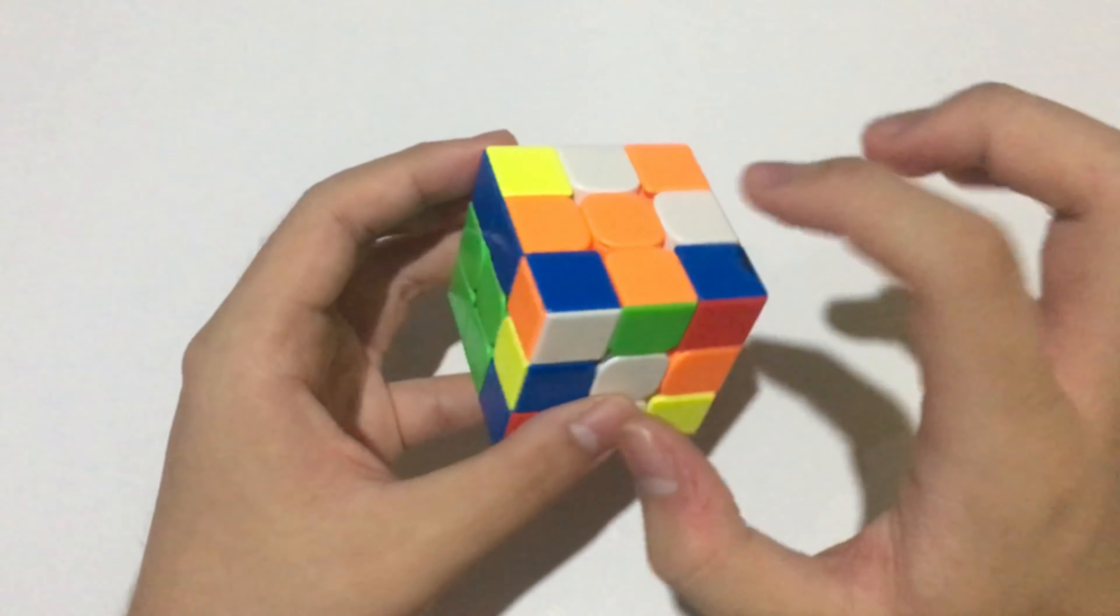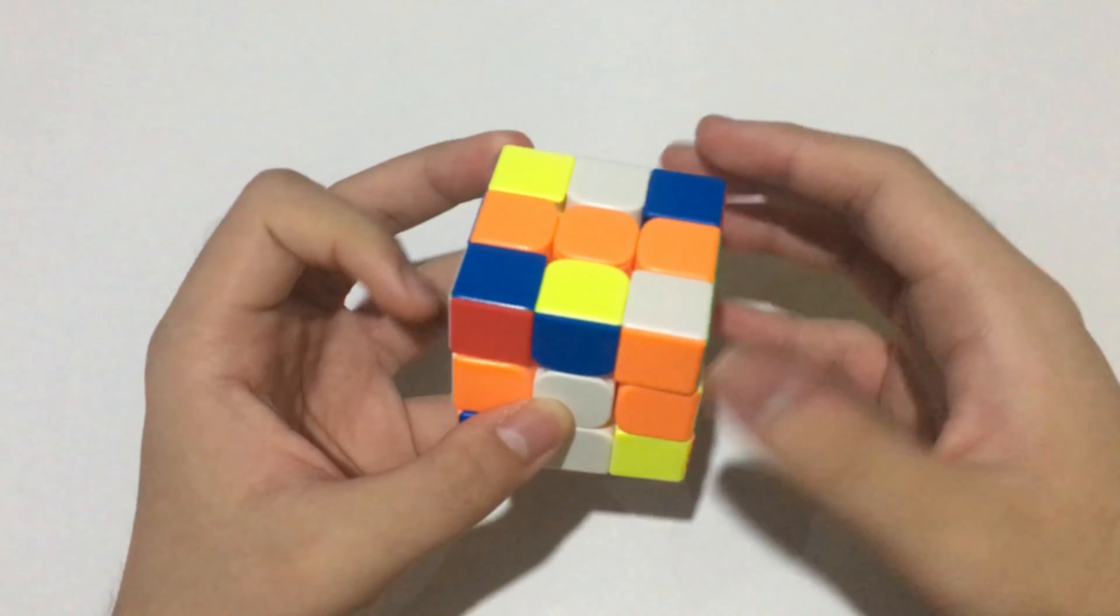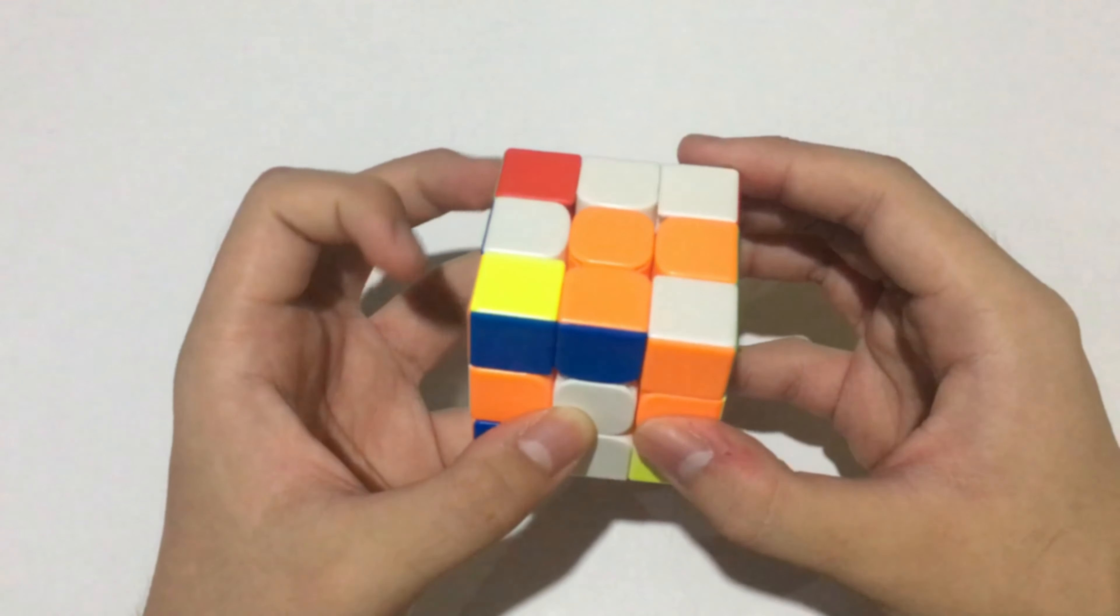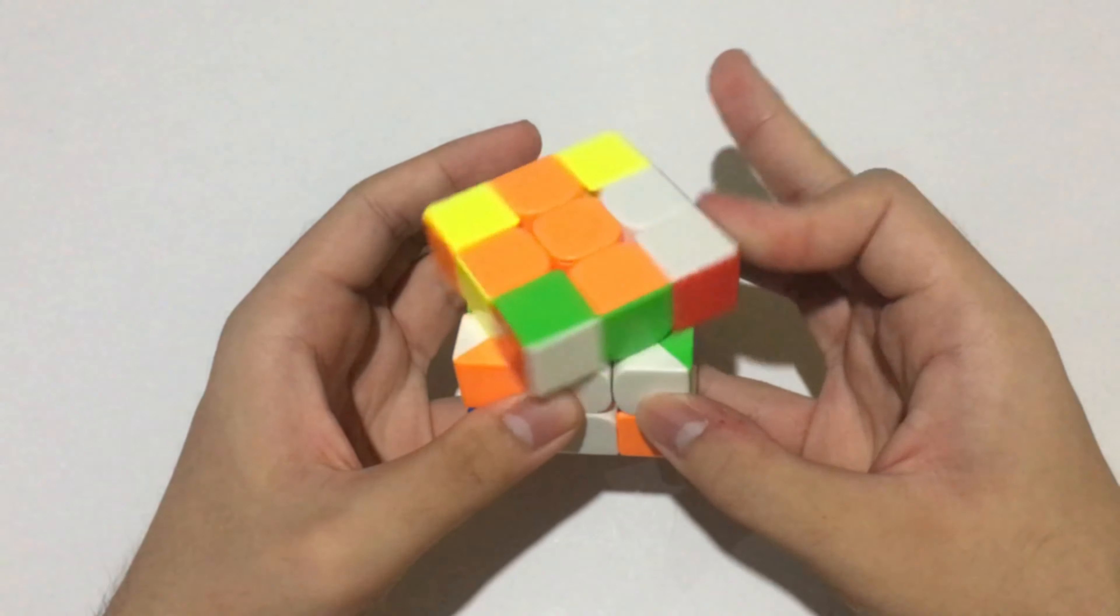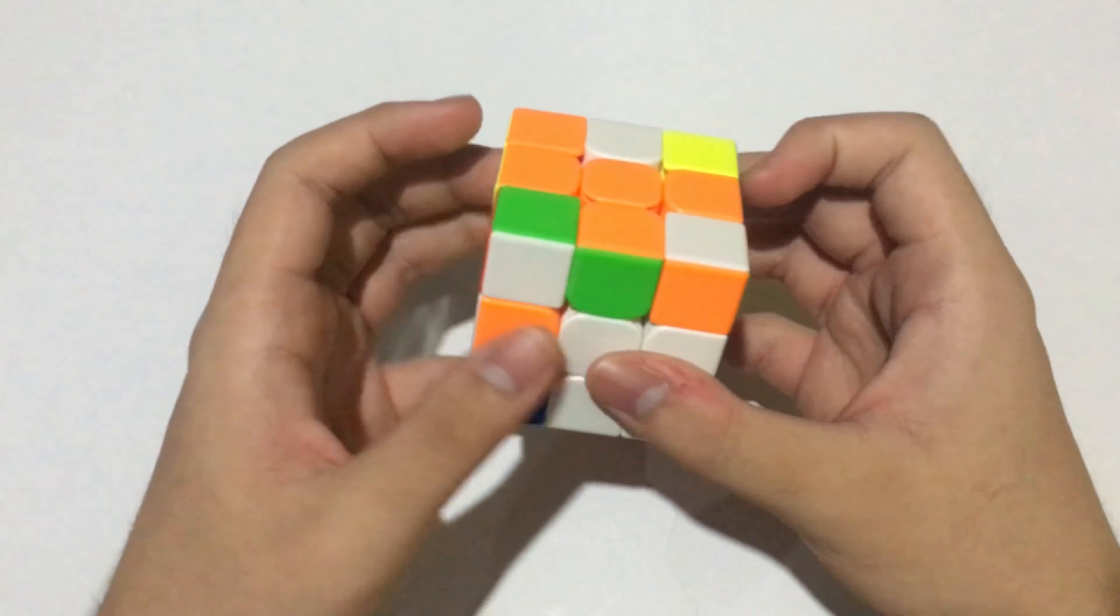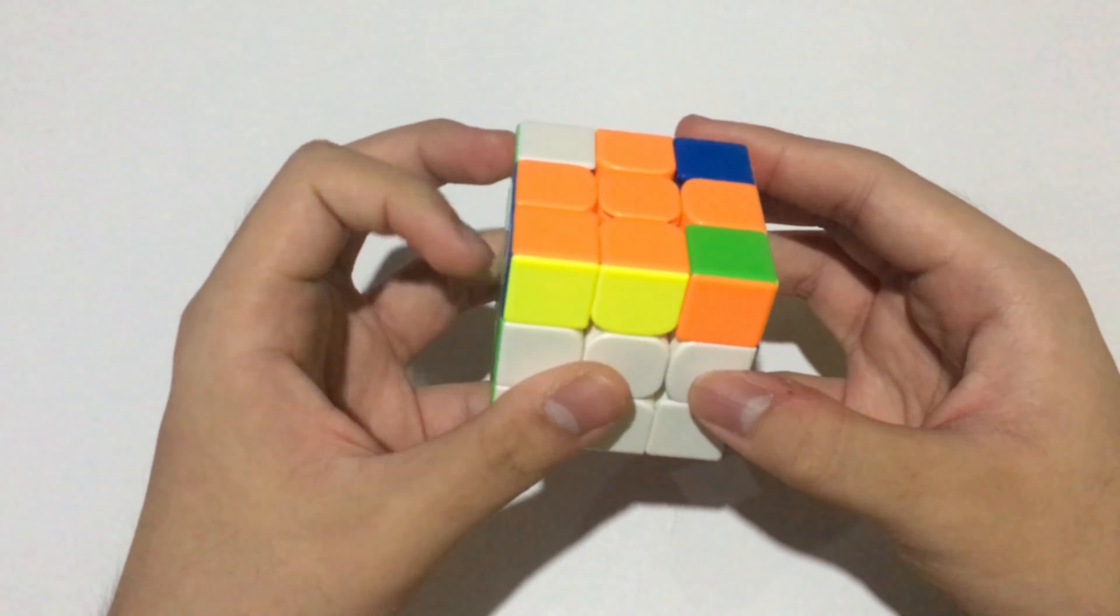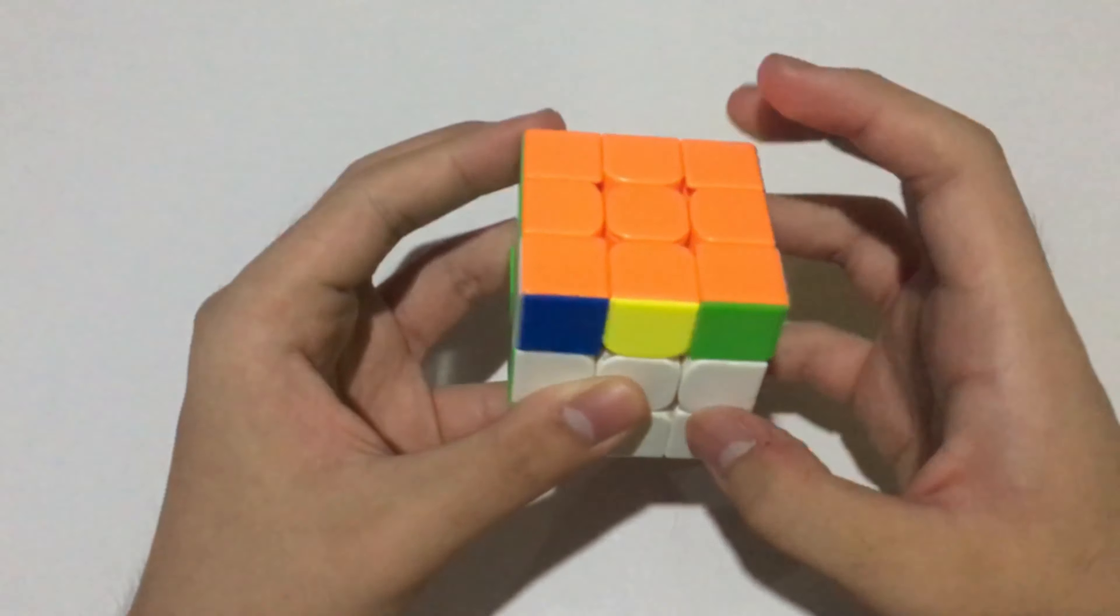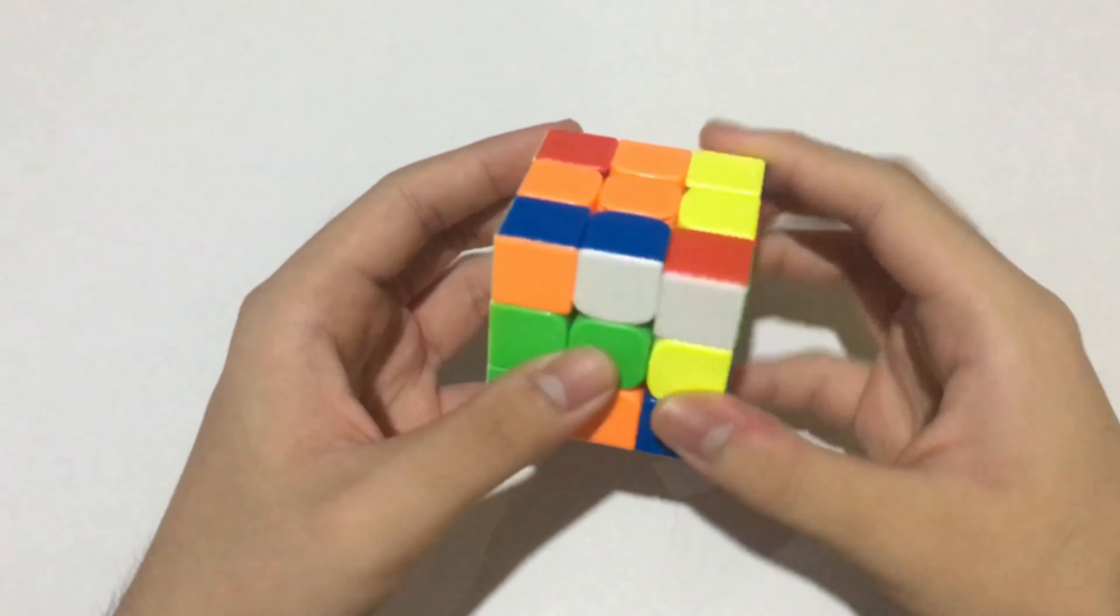I paired up these two by doing F moves like that, inserted on the back, and went straight into solving this pair. Luckily, after inserting this pair, this was a split pair. I inserted it on the left-hand side, got Sune and T perm. The cross solution on this solve was pretty nice.